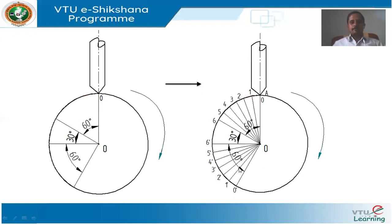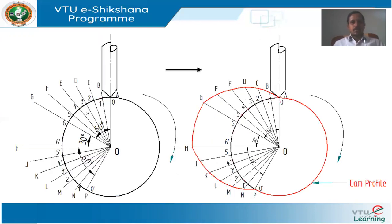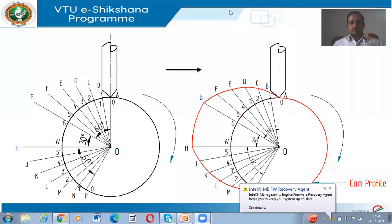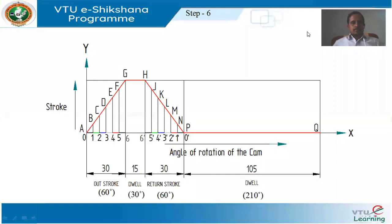After dividing the outstroke and return stroke angles into 6 equal parts and naming the divisions on the circumference of the base circle, extend lines from all these divided points outward up to some certain positions. Then from the displacement diagram, measure the vertical distances: A is the beginning point coinciding at 0; then 1 to B, 2 to C, 3 to D, 4 to E, 5 to F, 6 to G for outstroke.